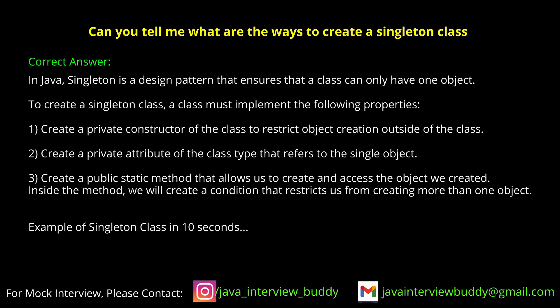Can you tell me what are the ways to create a singleton class? We can declare a private constructor and a static method. Why do we declare a constructor as private? The main use of a singleton class is when you create only one instance of a class. If we make the constructor private, we restrict other classes from instantiating it — it will be used within the class only.